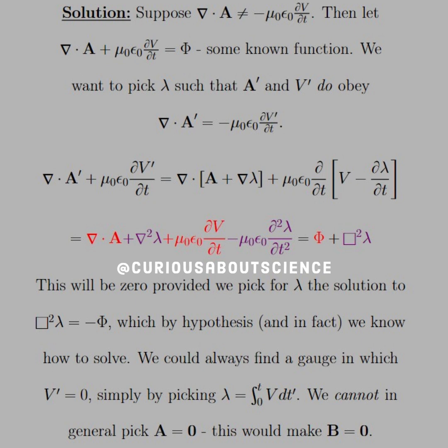Plus the mu naught epsilon naught dV/dt in red, minus the mu naught epsilon naught d squared lambda/dt squared, is equal to phi, the known function that we stated before.